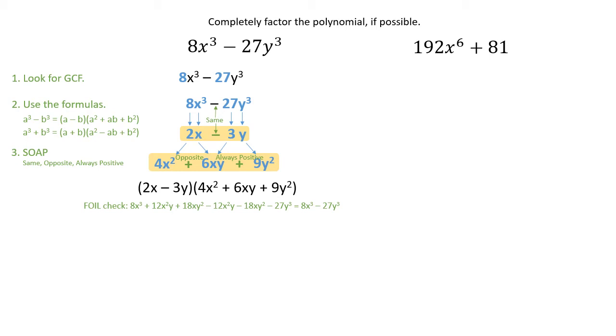Let's take a look at the second expression, 192x to the 6 plus 81. The first thing is going to be look for GCF, and 192 and 81 do have a common factor, and that factor is 3. With these, it's always nice to check 2, check 3, check 5. This particular problem, the common factor was 3. So we're going to factor that out and make sure we hold on to it for our answer. So dividing by that 3 and putting a pair of parentheses around the original expression is going to give us 192 divided by 3, which is 64x to the 6th, and 81 divided by 3, which is 27.